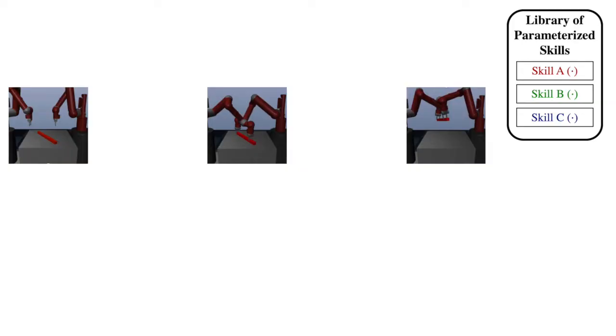Consider the task of lifting this bar using two hands, given a set of generic parametrized skills such as reaching, grasping, and lifting. Without even knowing the geometry or pose of the bar, one can answer that this task will involve grasping at either end of the bar, then lifting both ends up simultaneously.